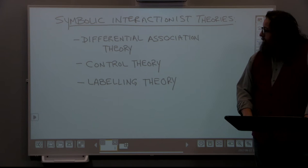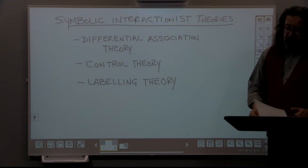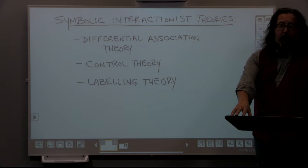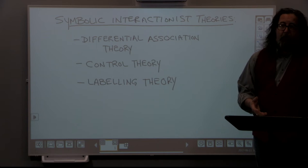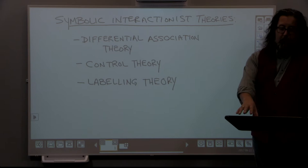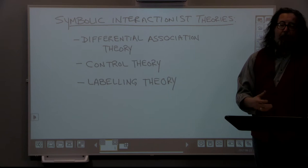The second symbolic interactionist theory we're going to look at is Control Theory. Basically, this says there's a conflict going on inside of us between our desire to do things that feel good — almost back to that Freudian concept of the id — and that's weighed against what we call inner and outer controls. An inner control we can broadly define as a person's perception of what's right and wrong. We can call it empathy or a conscience.